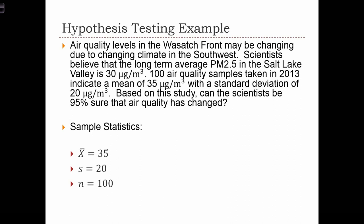Based on this study, can the scientists be 95% sure that air quality has changed? Let me parse this out for us. The pre-existing hypothesis about air quality in the Wasatch Front is that average PM2.5 levels should be at about 30 micrograms. This was the prevailing logic about what the air quality in the region is like. The scientists then go out and take a study of 100 air quality samples. So we have n equals 100.